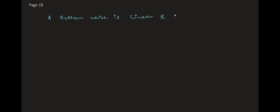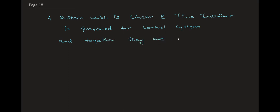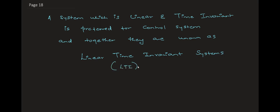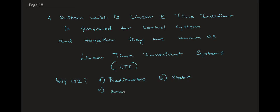A system which is both linear and time invariant is highly preferred for control systems for four main reasons: stability, predictability — you can predict outputs when they are not directly available — scalability, and time flexibility, since the system is time invariant.